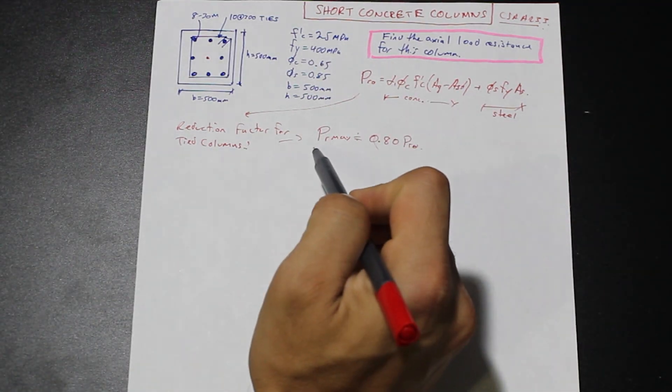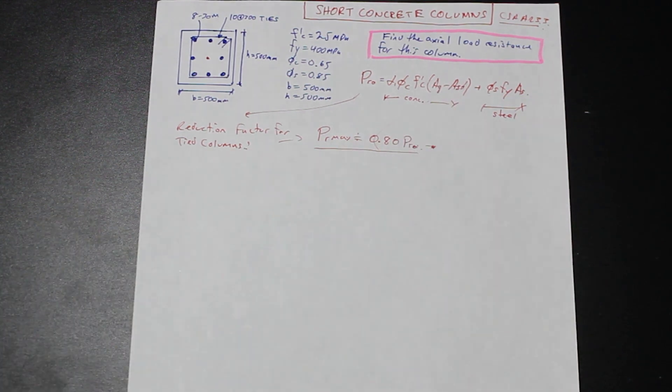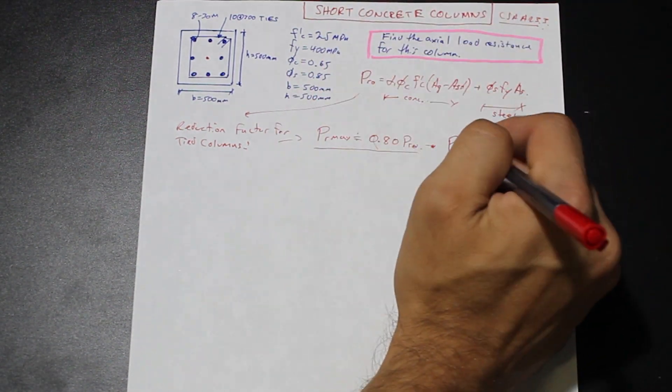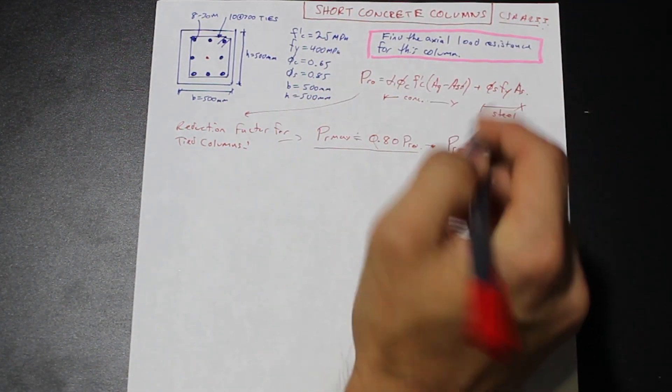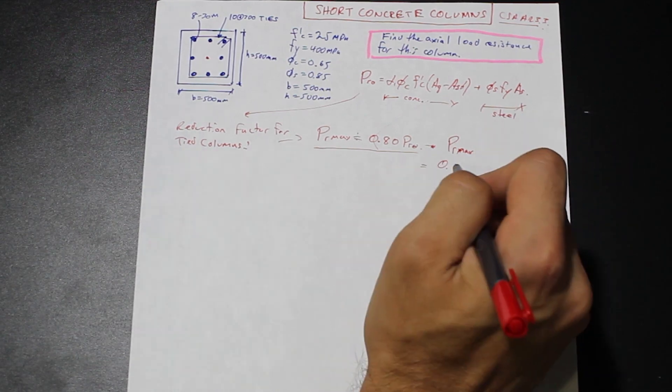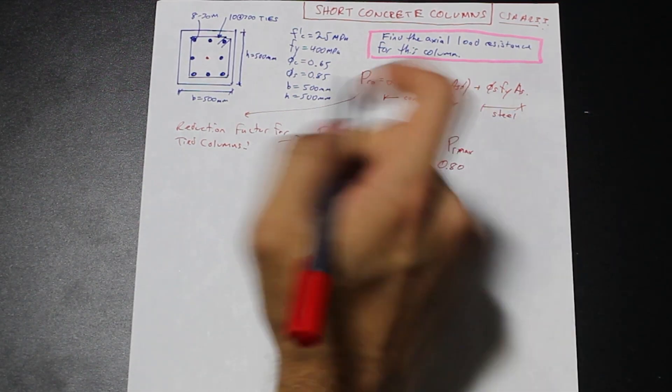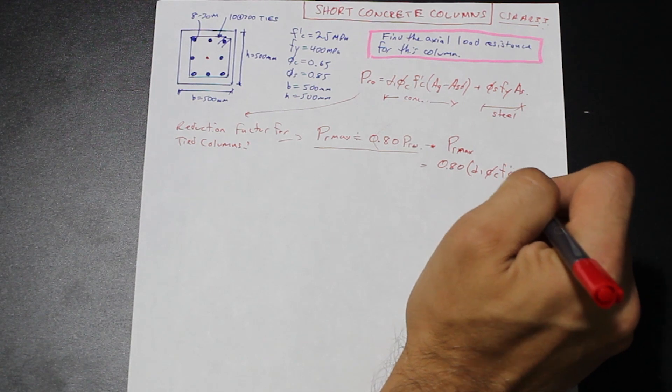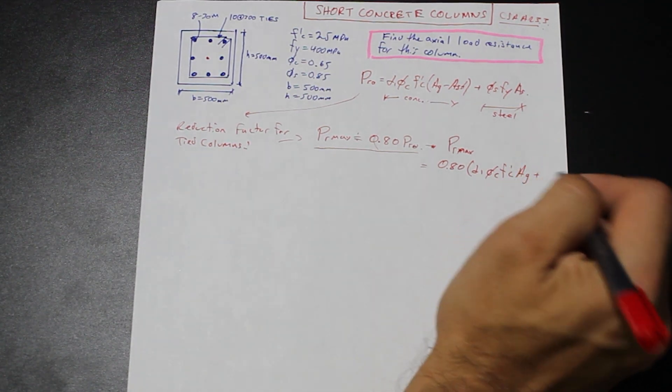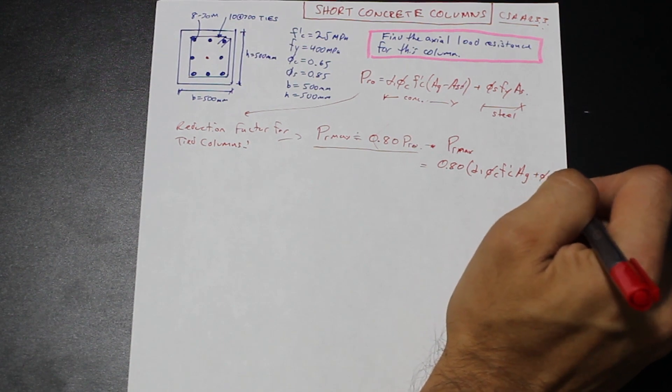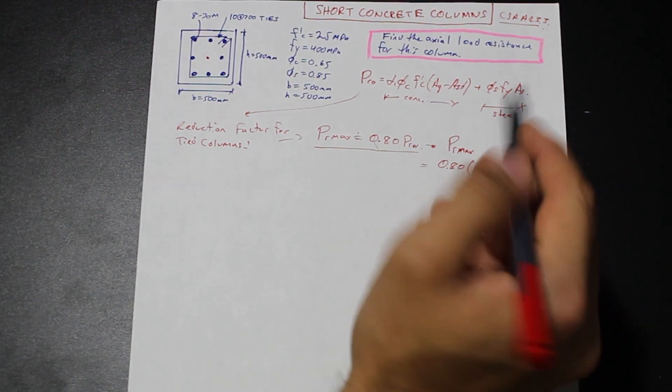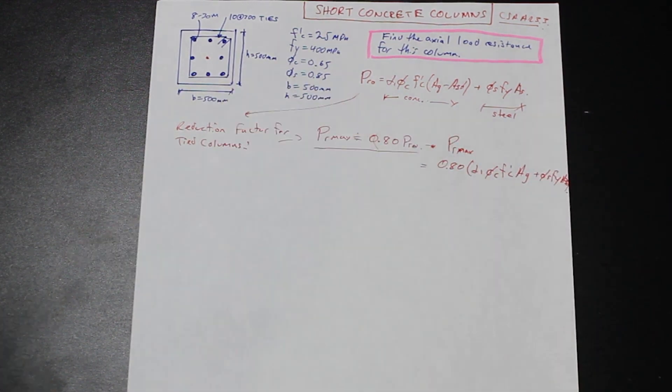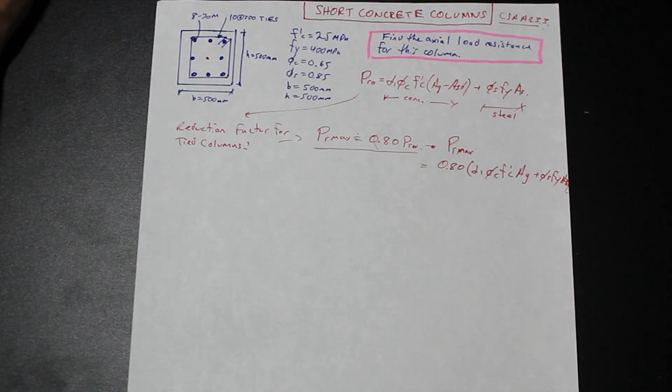If we simplify this, now we'll just take this over here. If we simplify this, we assume that we're just going to use AG. We can say that PRmax for tied columns, not spiral columns, we're not talking about circular, we're just talking about square here. So PRmax is simply simplified 0.80, and this is for columns that have the smallest dimension 300 or greater, times alpha1 phi_c f'_c AG plus phi_s f_y AST. So area of steel.